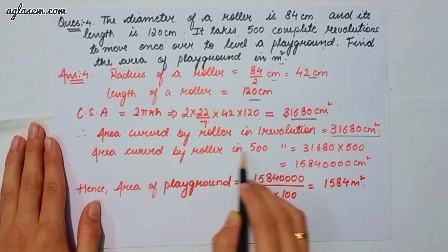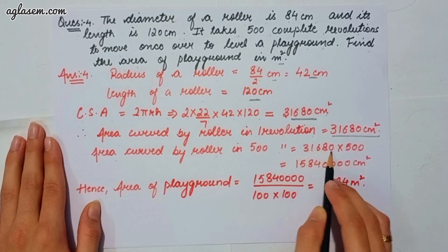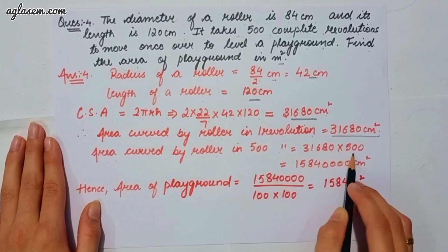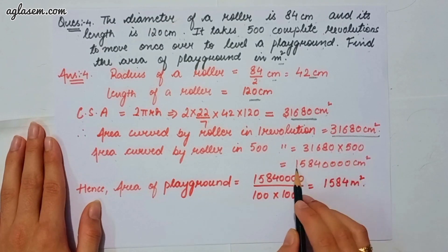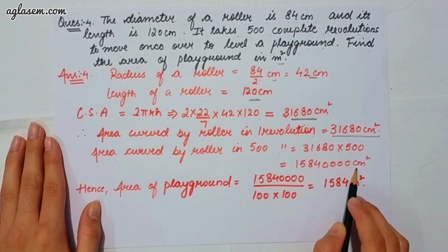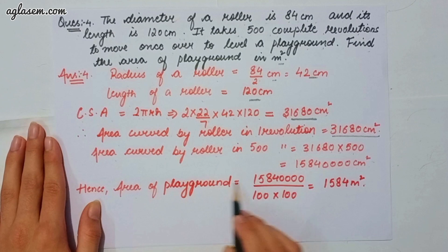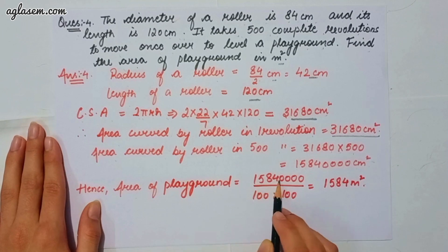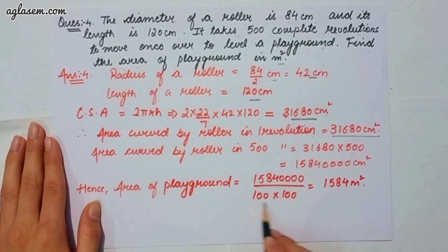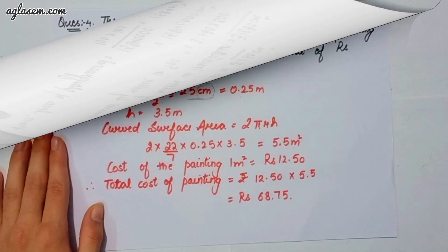Area covered by the roller in 500 revolutions = 31,680 × 500 = 15,840,000 cm². Converting to square meters: 15,840,000 ÷ (100 × 100) = 1584 m². So the area of the playground is 1584 m².